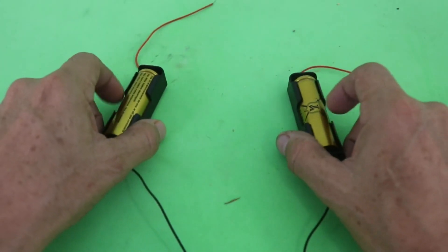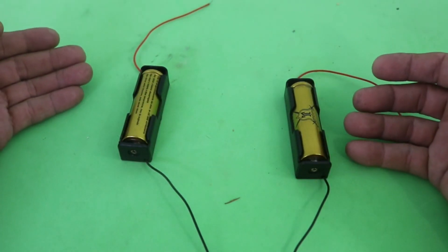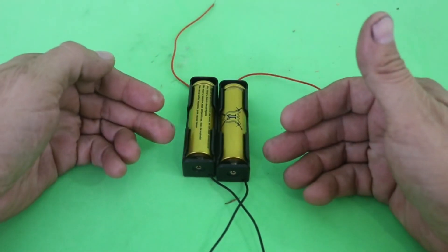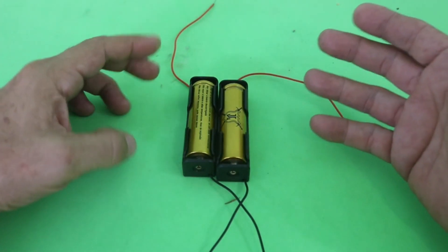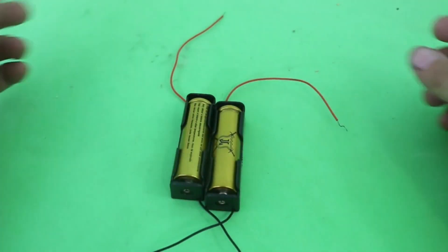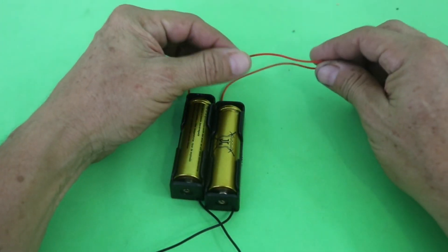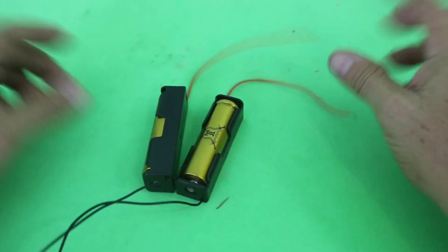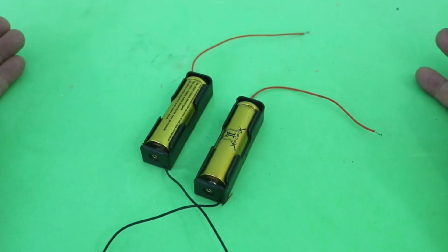So if you want to connect these two batteries in parallel in order to have the same voltage as a single battery but double the current capacity, then we connect positive with positive and negative with negative and we have a parallel connection.